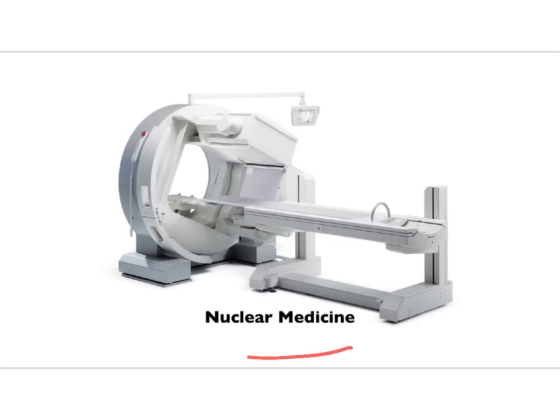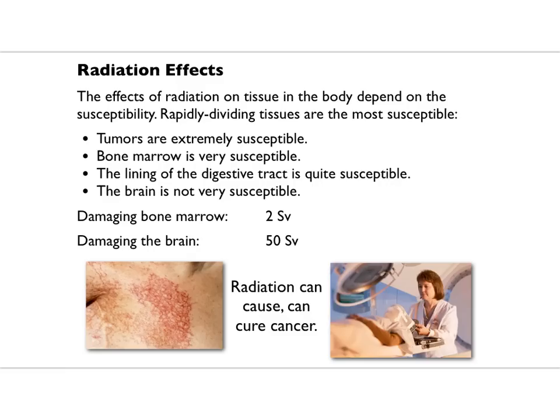Now I want to talk about nuclear medicine as an application of all the nuclear stuff we've been thinking about. The effects of radiation on tissues in the body depend upon how rapidly the tissues are dividing. Rapidly dividing tissue is the most susceptible — tumors are extremely susceptible because rapid cell division is a tumor's thing. Bone marrow is very susceptible. The lining of the digestive tract is very susceptible. Hair follicles — your hair is always growing — very susceptible.